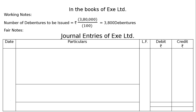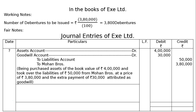Journal entries of EXE Limited. First, we have to record the business assets and liabilities: assets account debited Rs. 4 lakh, to liabilities account Rs. 50,000. Hence, the purchase consideration should be assets minus liabilities, that is 4 lakh minus 50,000, that is equal to Rs. 3,50,000.